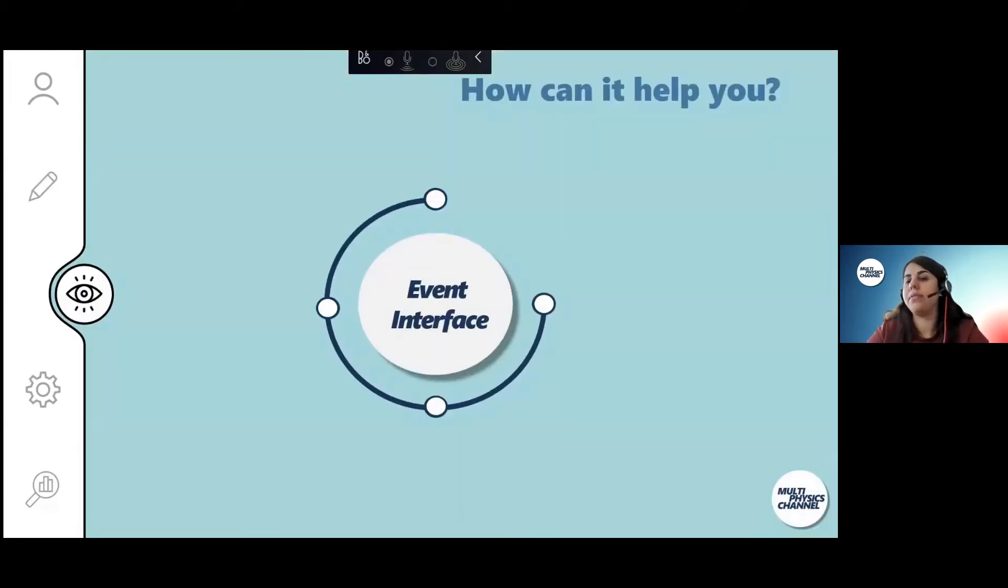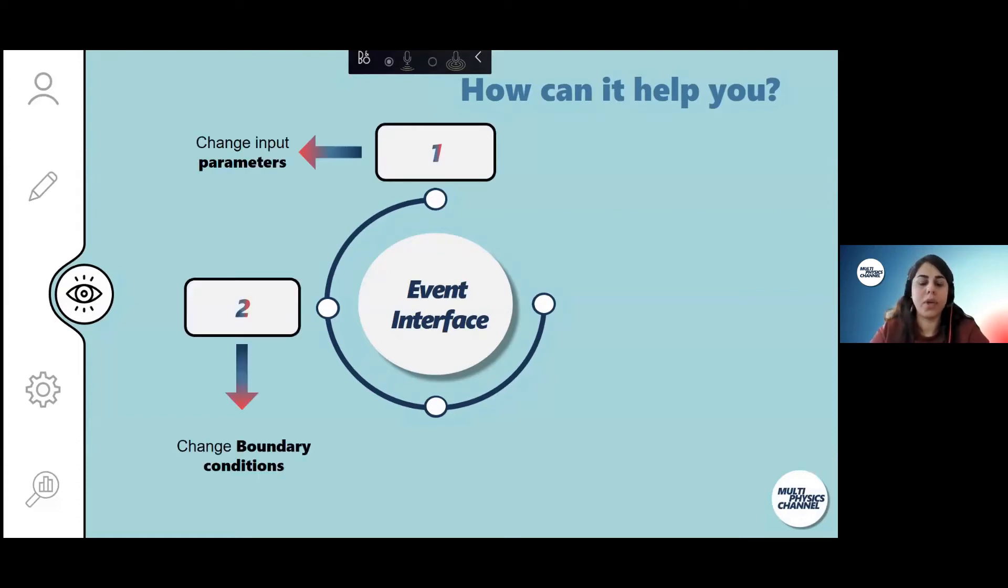So how can event interface help you? You can change the value for your parameters. You can change your boundary condition, which is really easily done by events. I don't know if there is another way, but it wouldn't be that simple. You can change the physics involved in your system, and also you can change your domain.